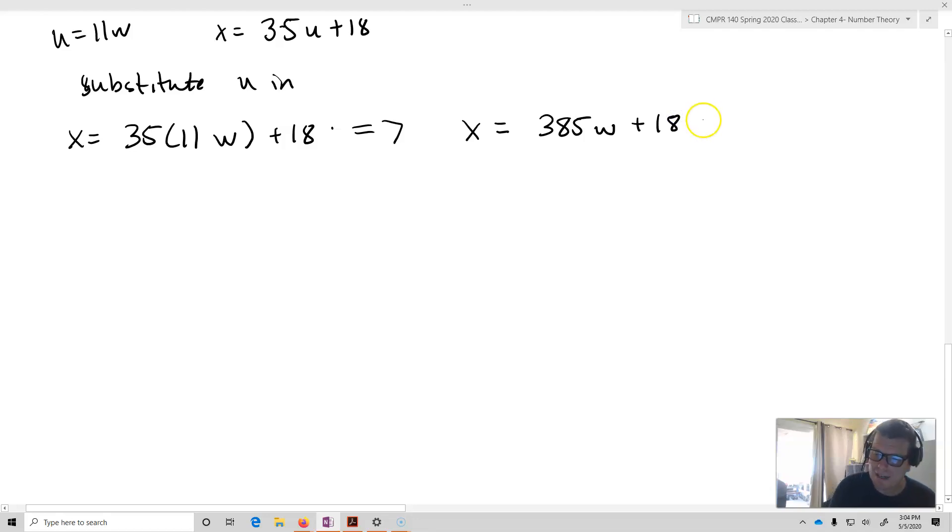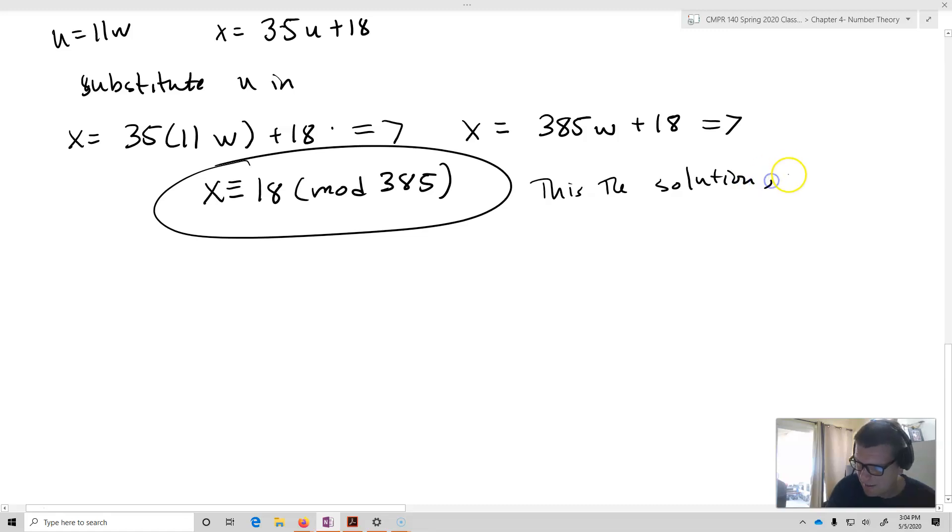What that means, then, is that x is then equivalent to 18 mod 385, because that's the division algorithm. So this is the solution. Or actually, we should state that x equals 18. x equals 18 is our real solution here.